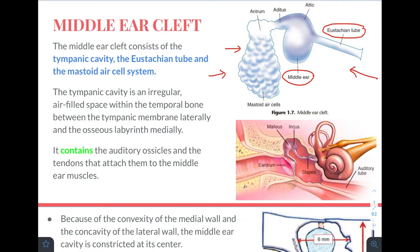The tympanic cavity is an irregular air-filled space within the temporal bone, between the tympanic membrane laterally and the osseous labyrinth medially. The tympanic membrane separates the middle ear from the external ear, and medially the osseous labyrinth — basically the inner ear — lies medial to the middle ear. The middle ear cleft contains the auditory ossicles: the malleus, incus, and stapes, and the tendons that attach them to the middle ear muscles.